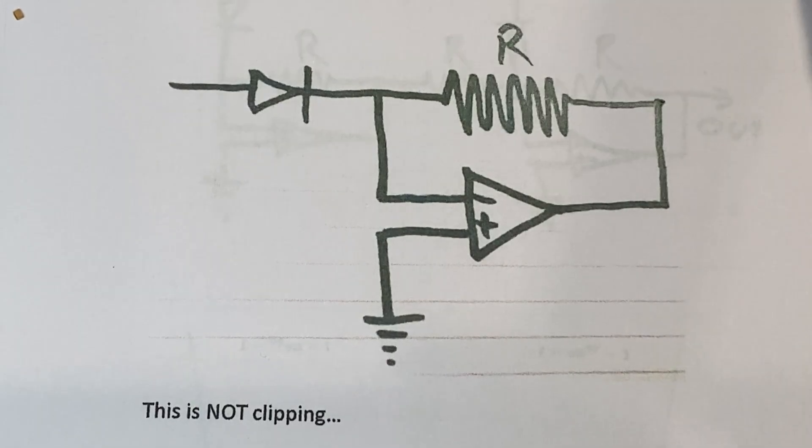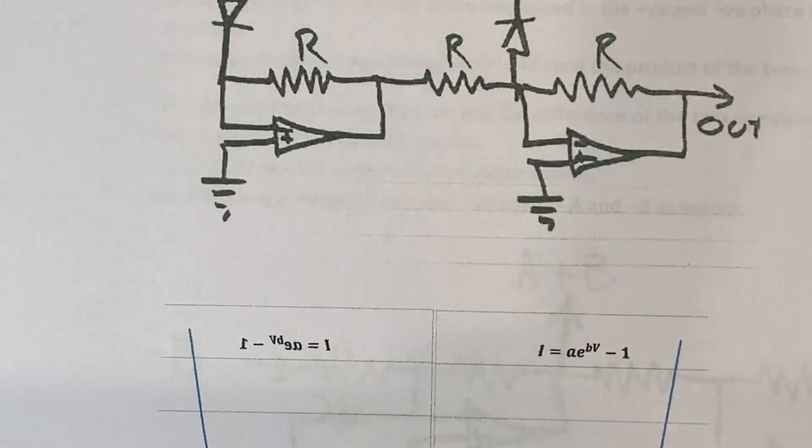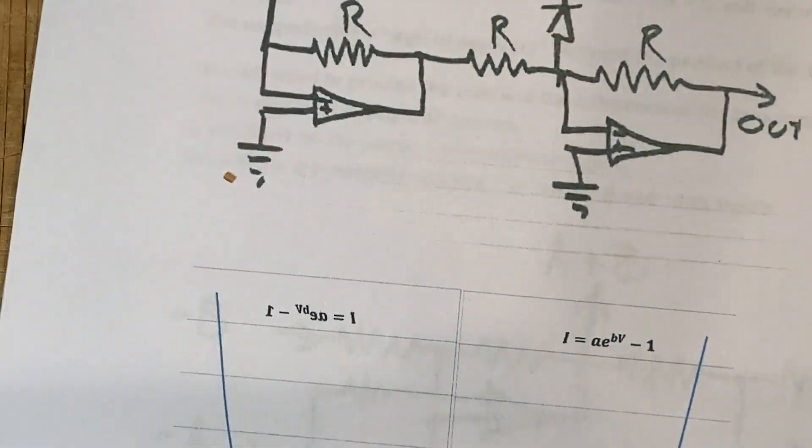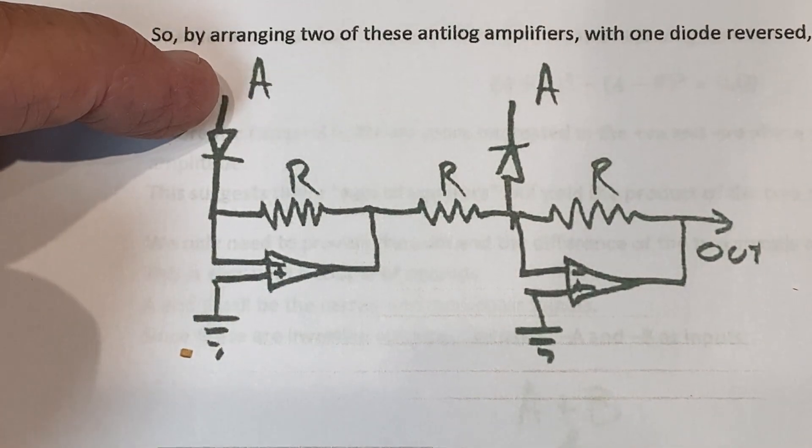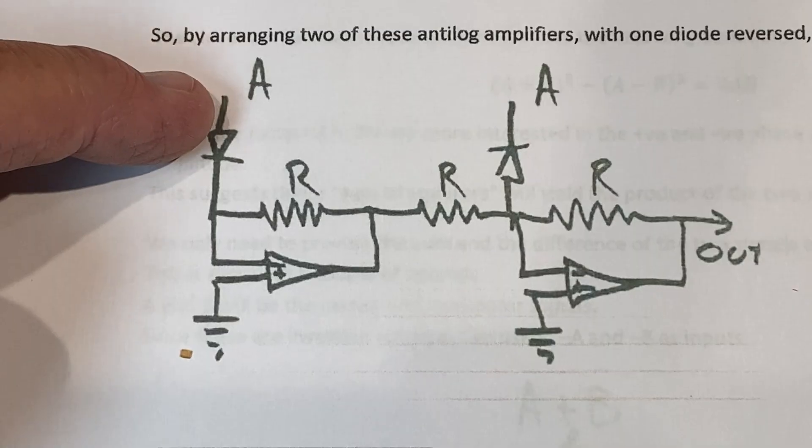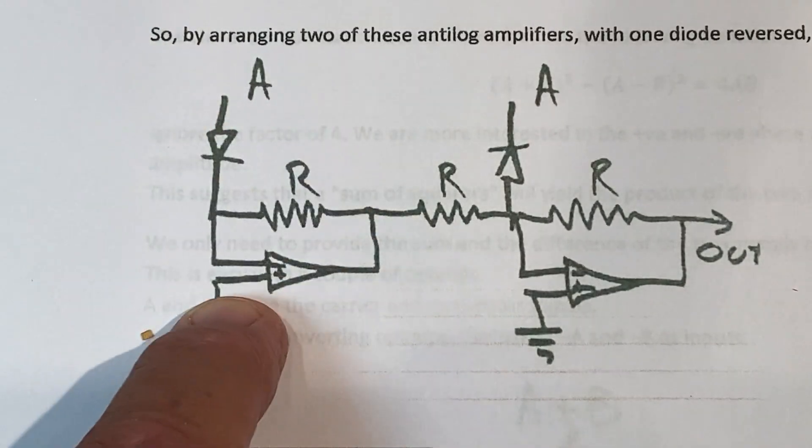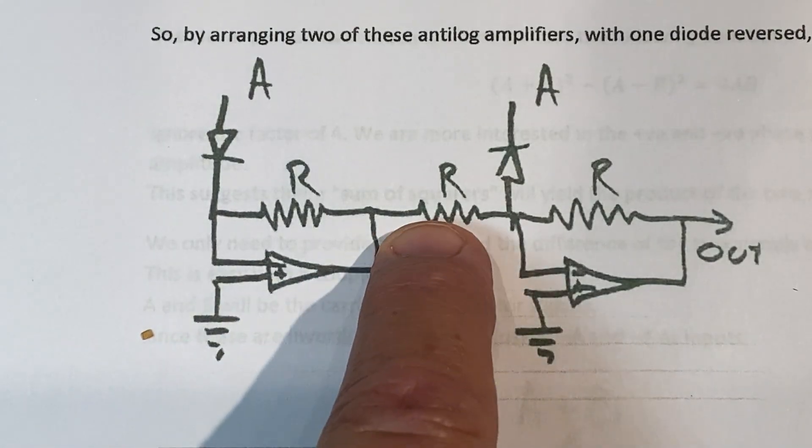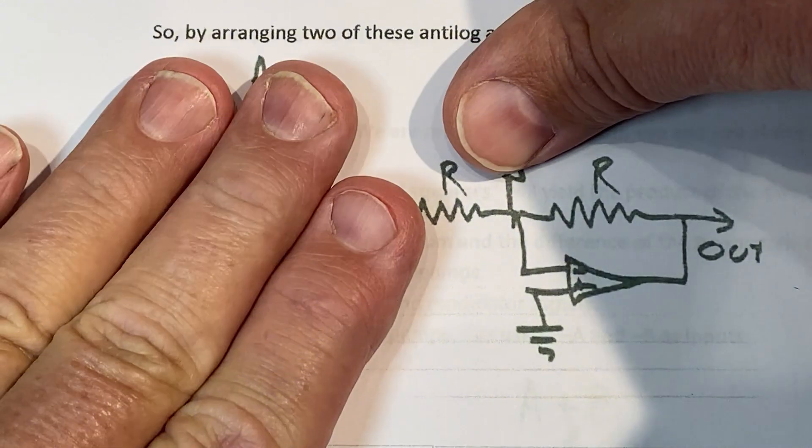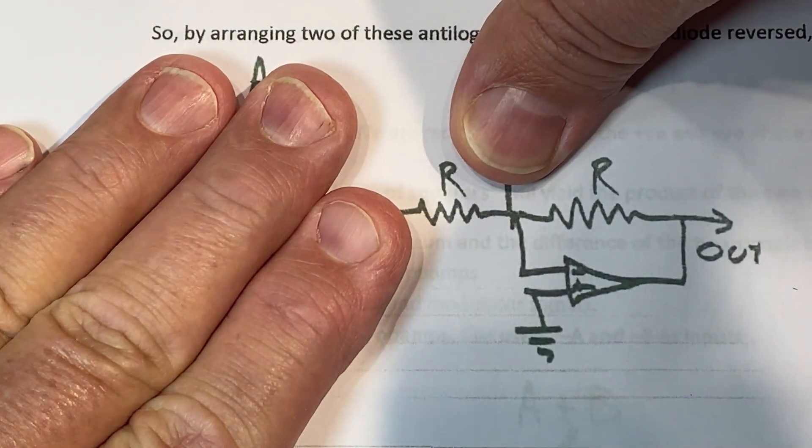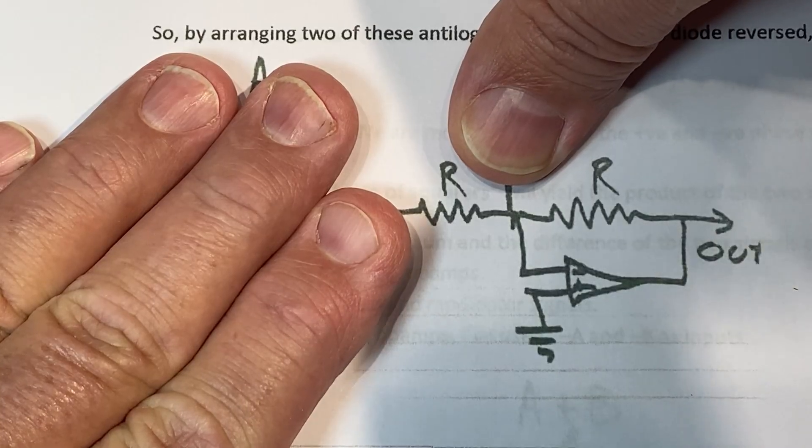Now what is pretty creative about Sebastian's solution is that he puts two of these together, where if the voltage of a signal is positive, it's going to go through one of these anti-log amplifiers, and then he's going to send it through another resistor pair. And this is just a garden variety op-amp inverting amplifier.